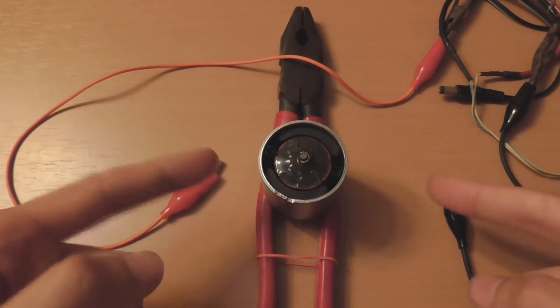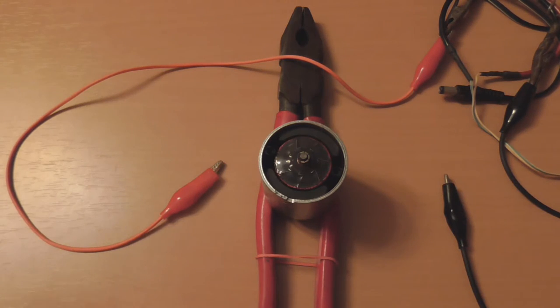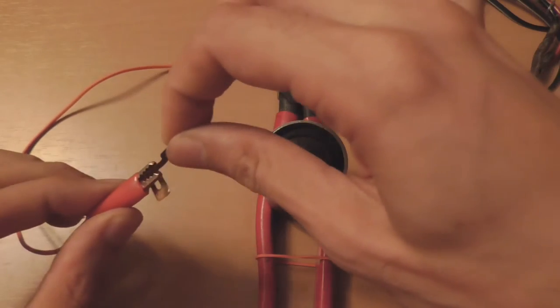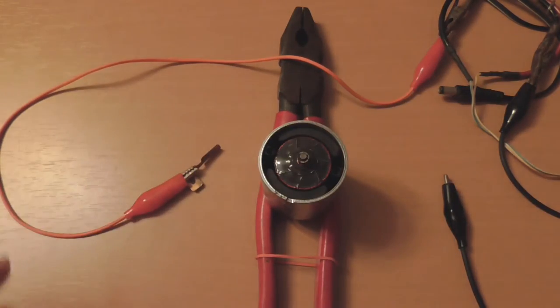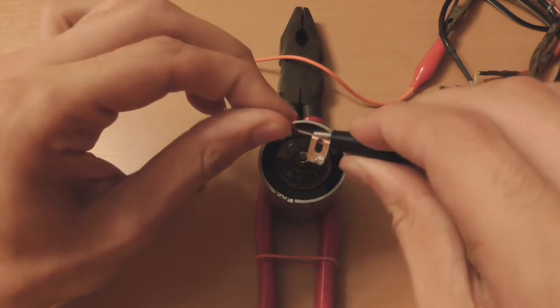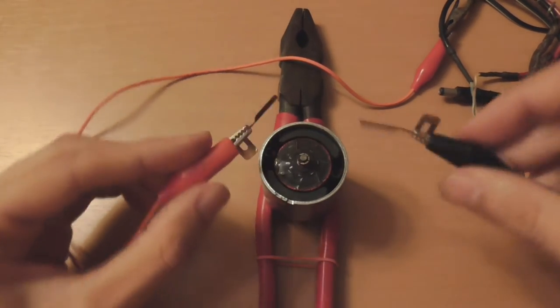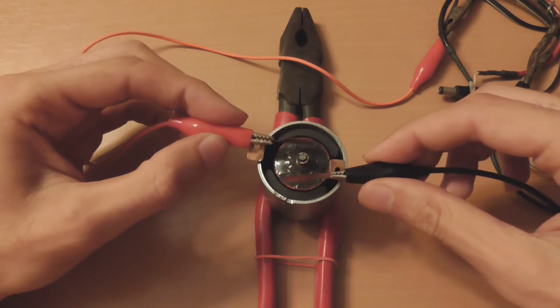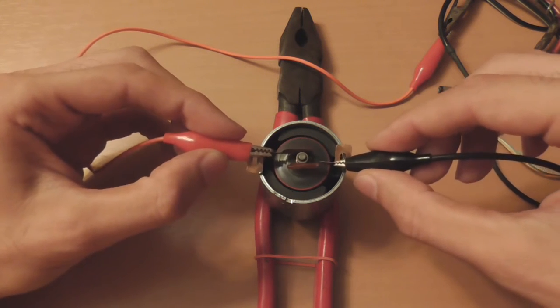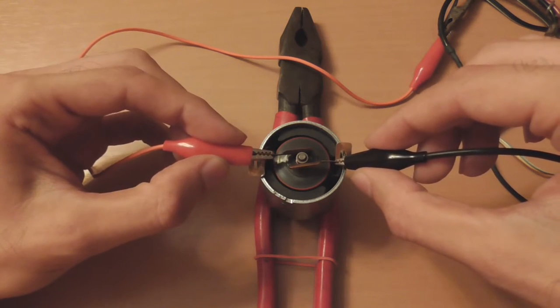Unfortunately, using alligator clips in place of motor brushes can actually cause damage to the commutator, so a better idea is to get some thin copper reeds. Simply connect the copper reeds to the alligator clips like so. And connect them. And then, go ahead. Okay.